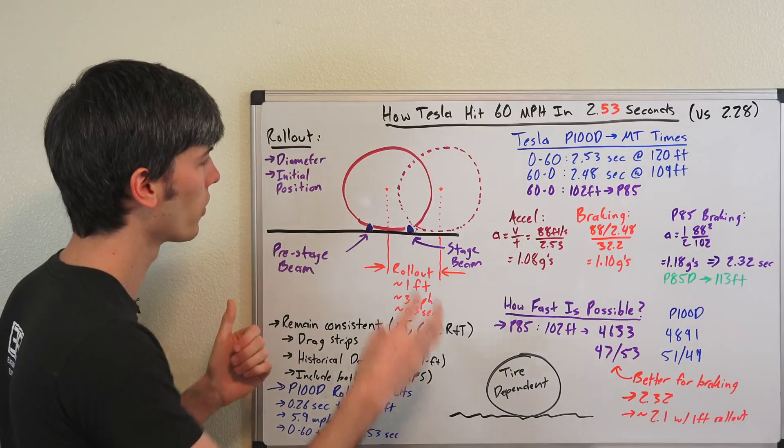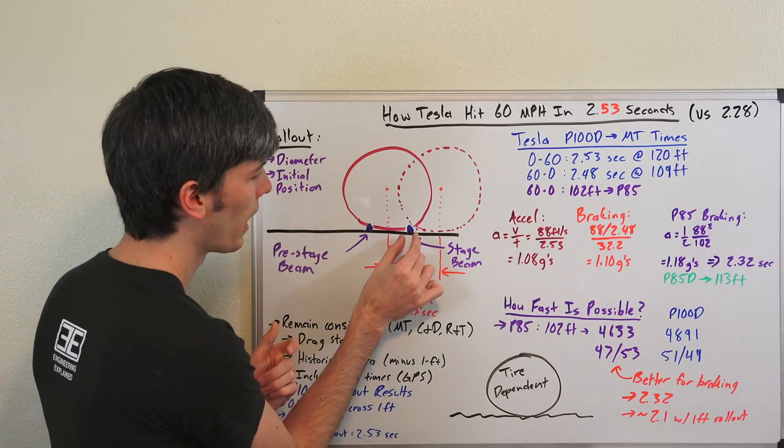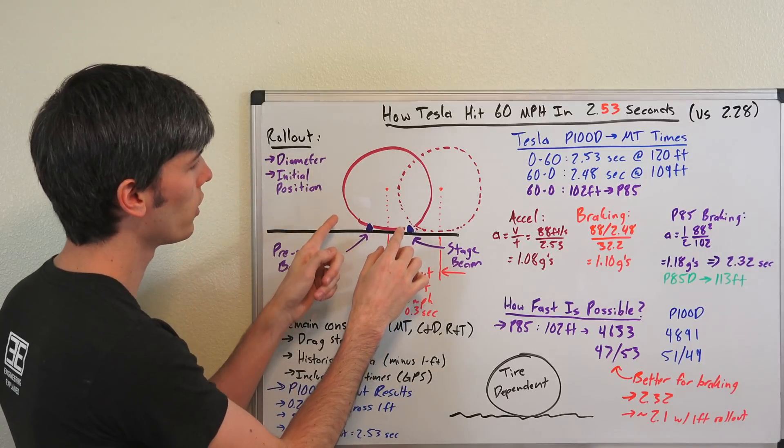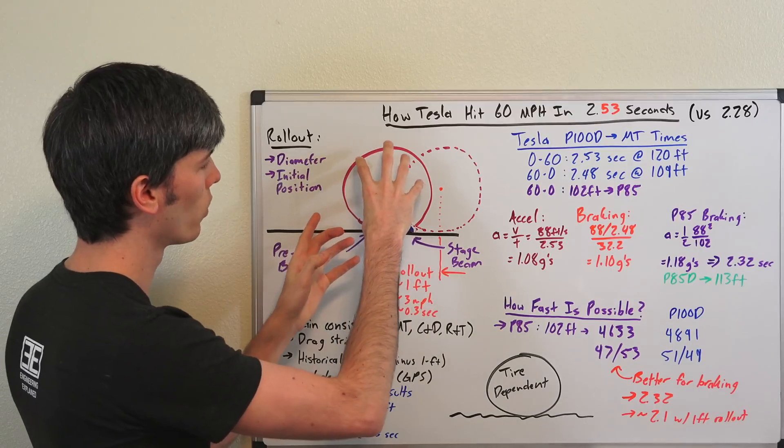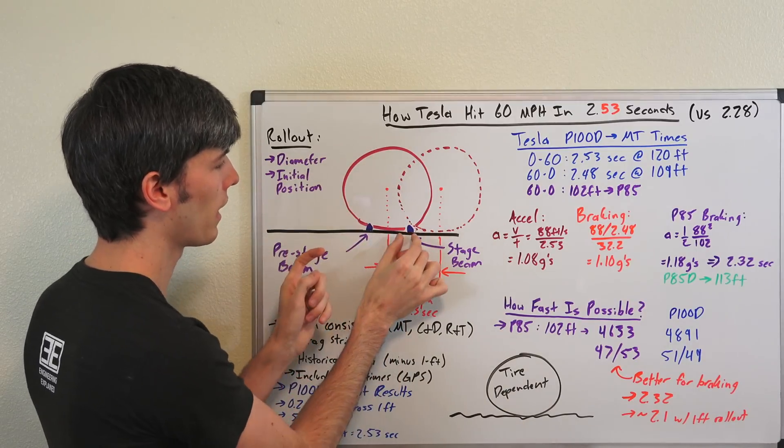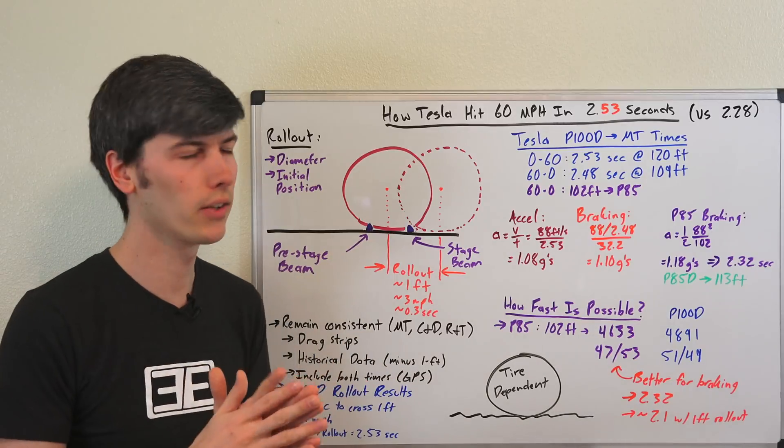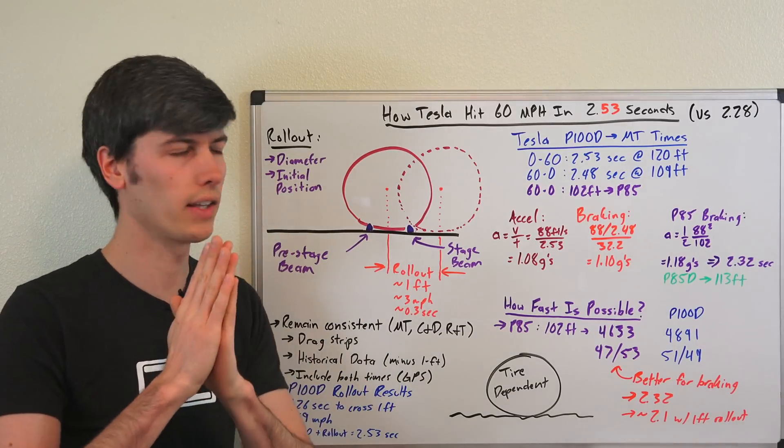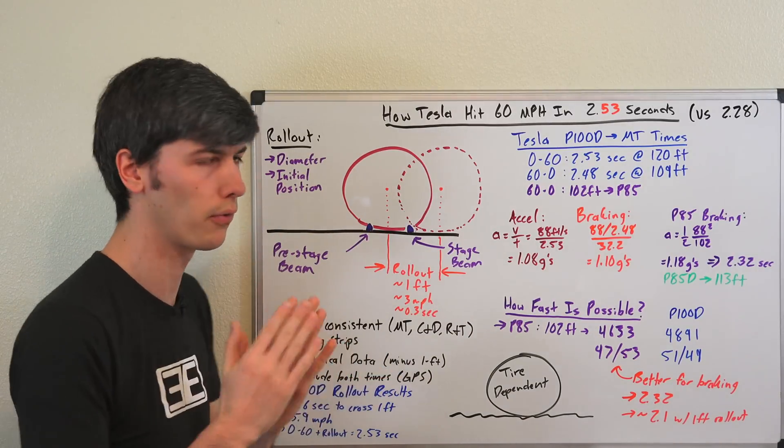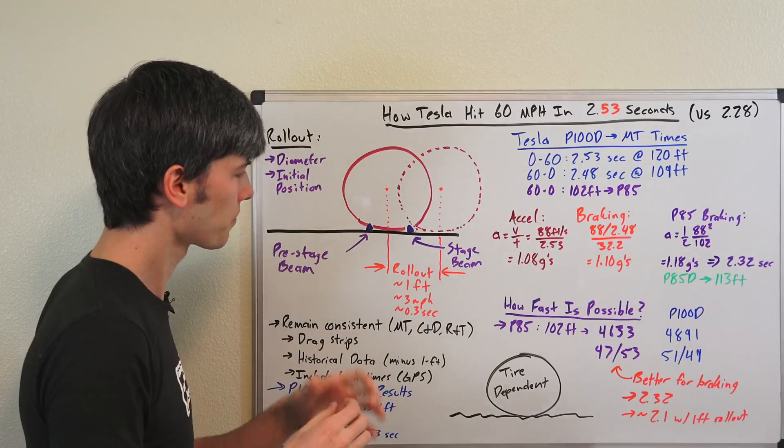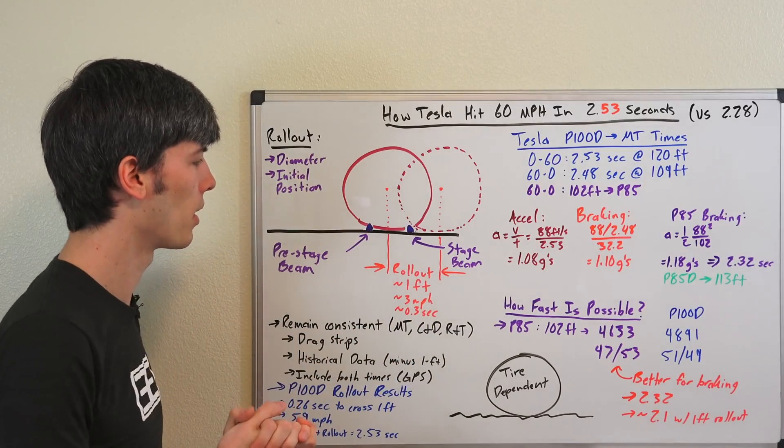Also the initial position matters. So if you roll up to the drag strip and you come just right when you get onto that stage beam and you stop, then you're going to have more of an advantage than if you were to roll a little bit further and have less distance to travel before that clock starts. So what the industry decided to do to normalize all of this is just decide that every vehicle will get the first foot free. You don't measure that first foot of travel distance and so that keeps it consistent among everyone.